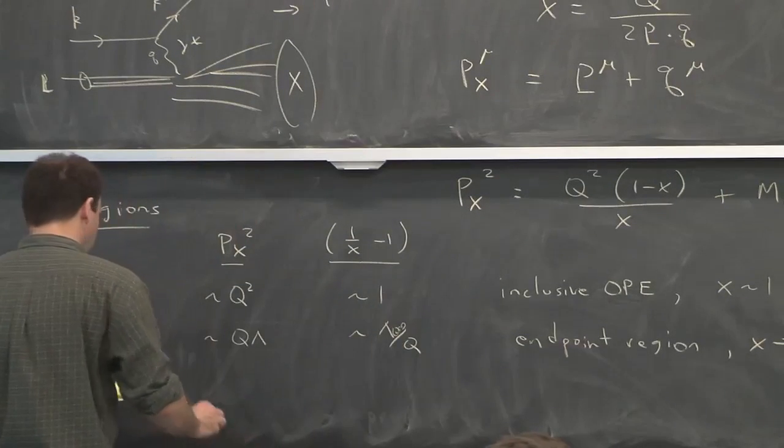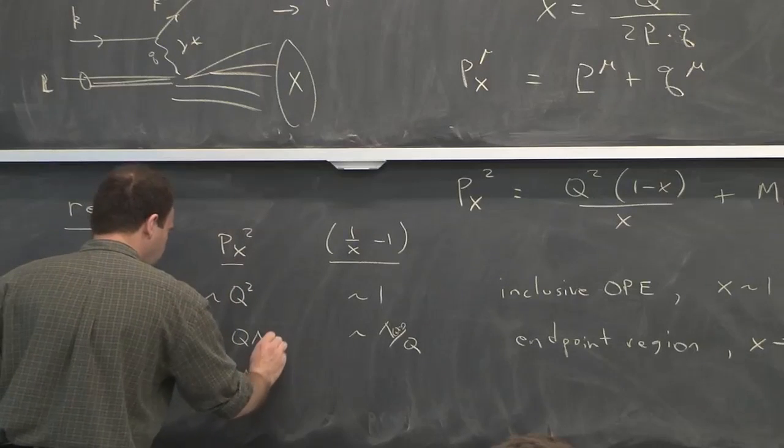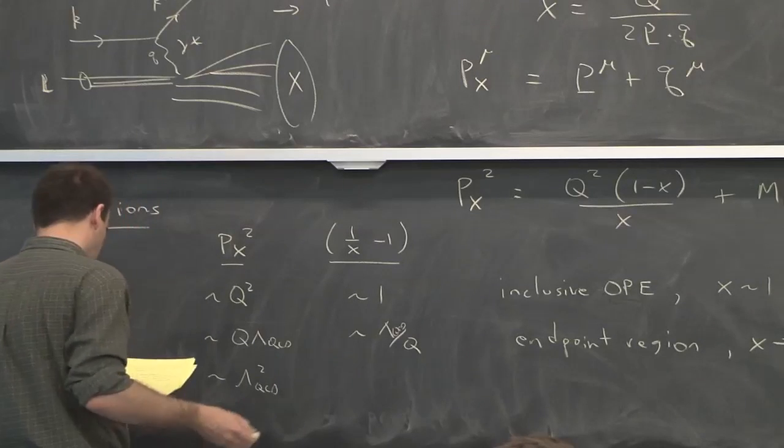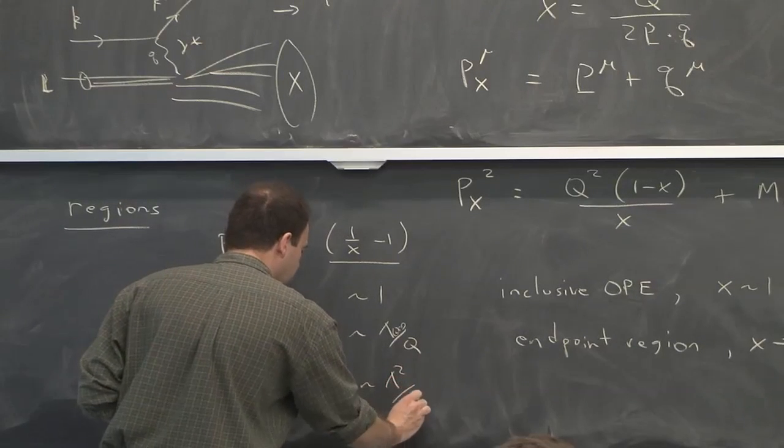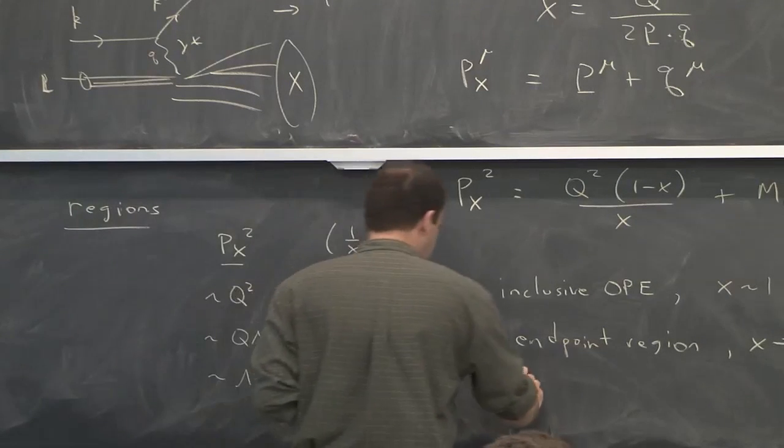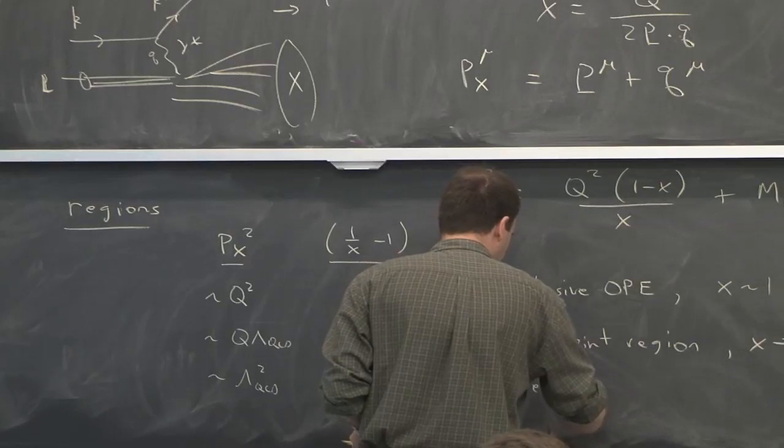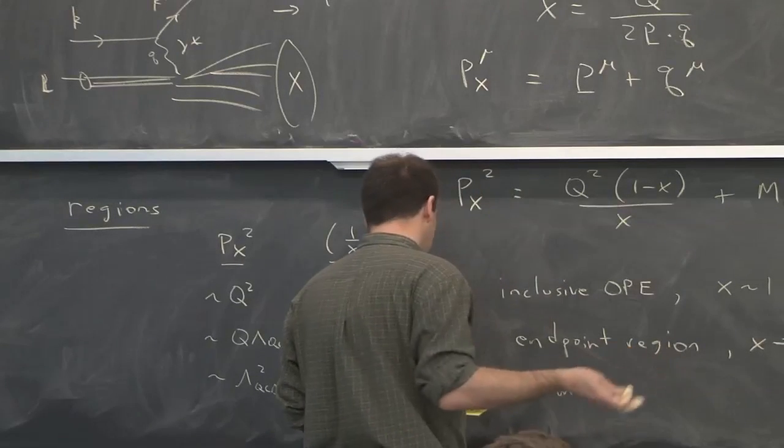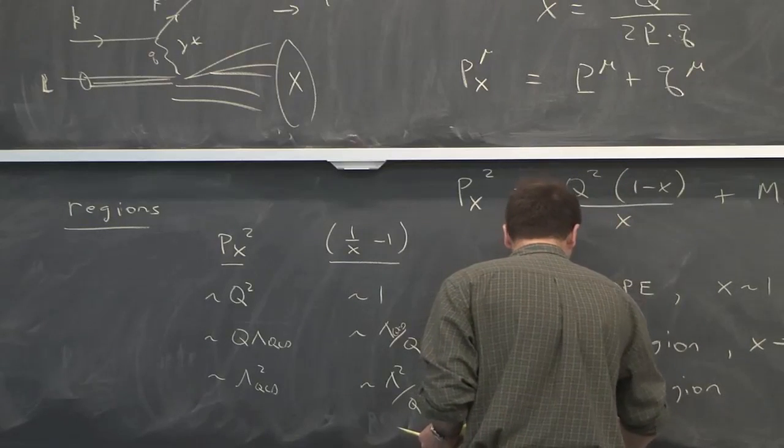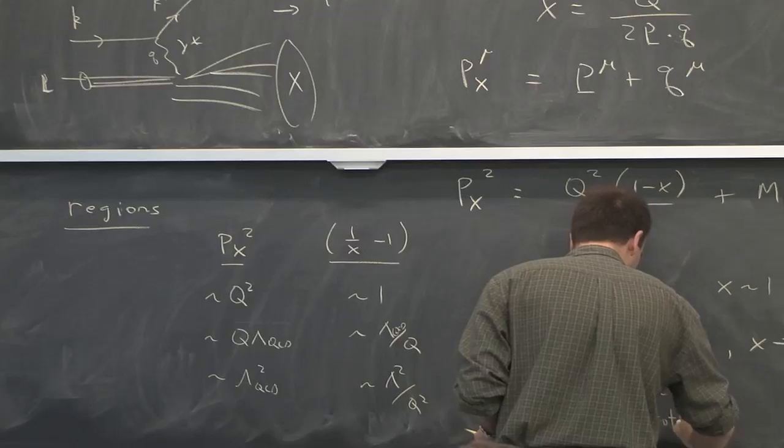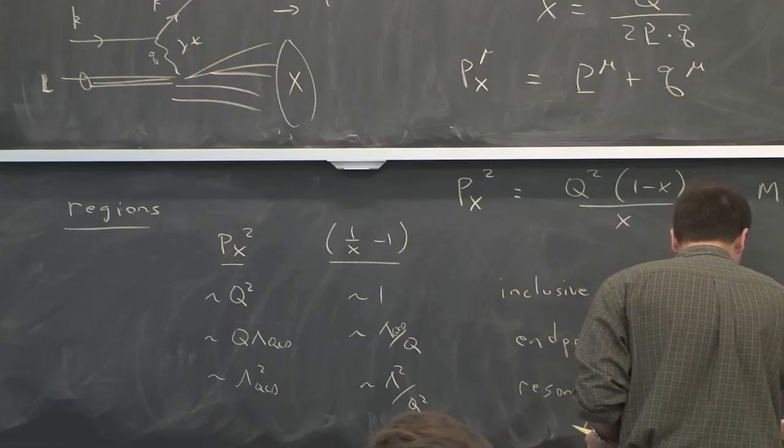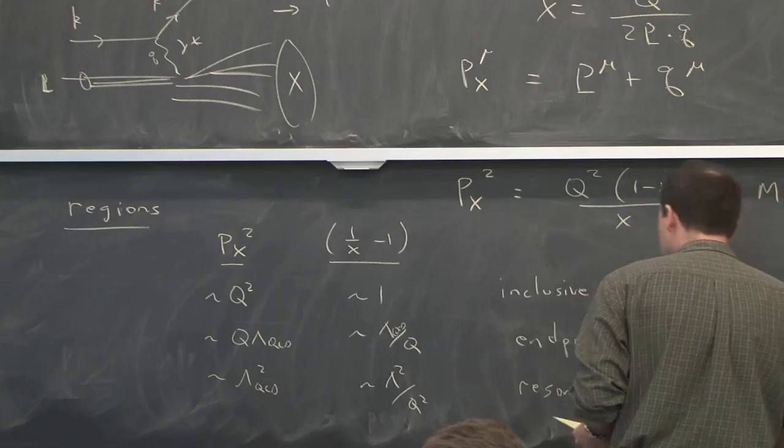There's even a third region where the P_x squared becomes hadronic, lambda QCD squared. And that's, like here, 2 powers. So taking that factor to be really small, and that's kind of the resonance region. And that's the case where the final state x is just another proton or an excited state of a proton. So that's where elastic scattering would be. And exclusive, that's an exclusive process. It's not inclusive anymore.